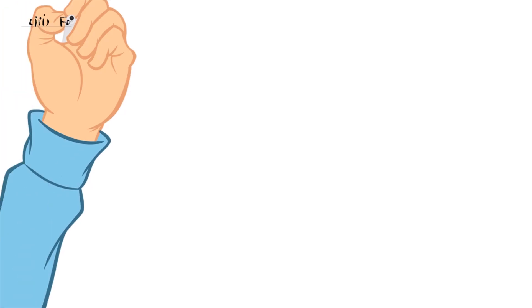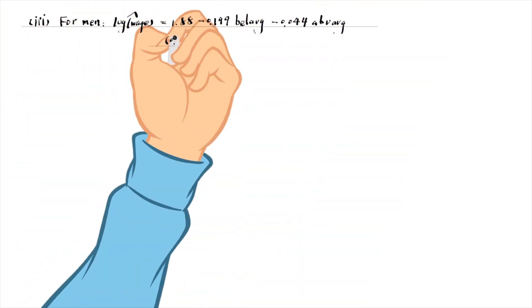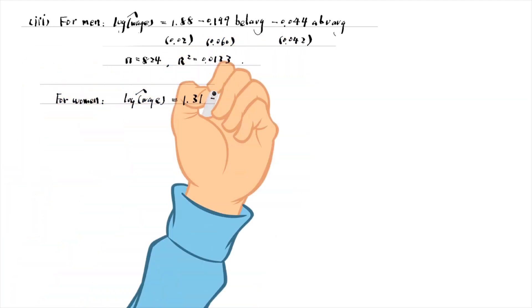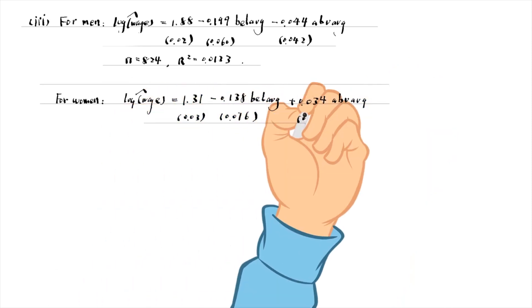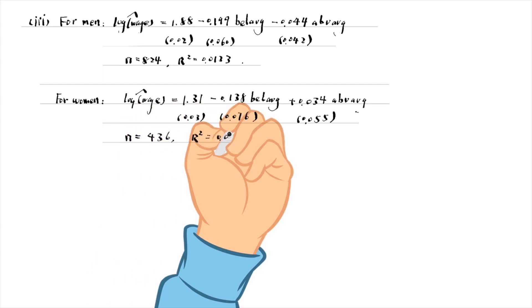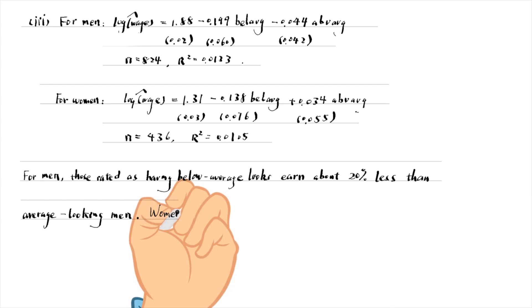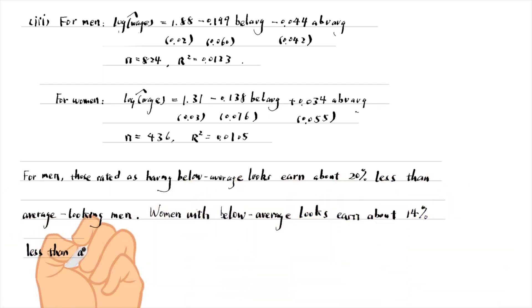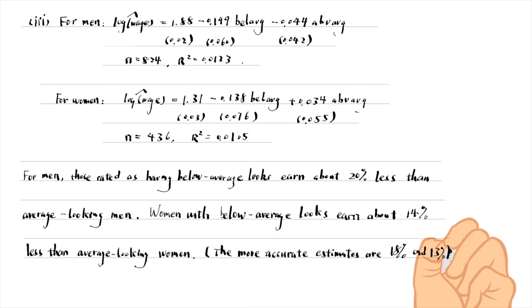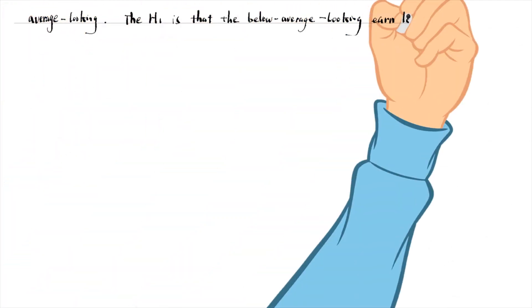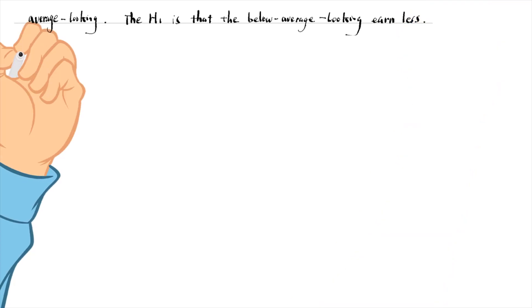The estimated equations for men and women are as follows. For men, those rated as having below average looks earn about 20% less than average looking men. Women with below average looks earn about 14% less than average looking women. The more accurate estimates are minus 18% and minus 13%. The null hypothesis is that there is no difference in wages between below average looking and average looking. The p-value for men is 0 to 3 decimal places.